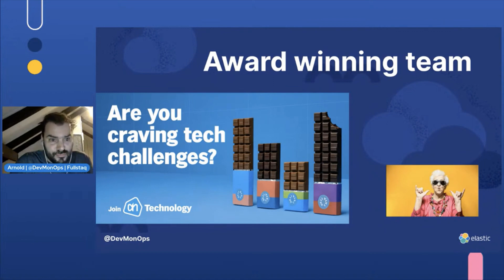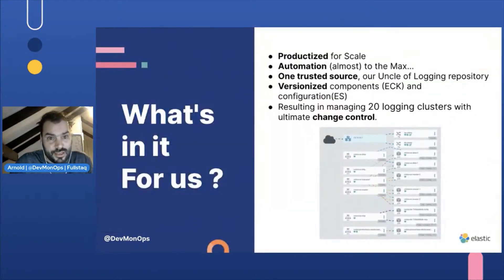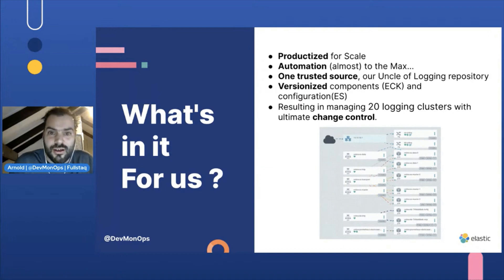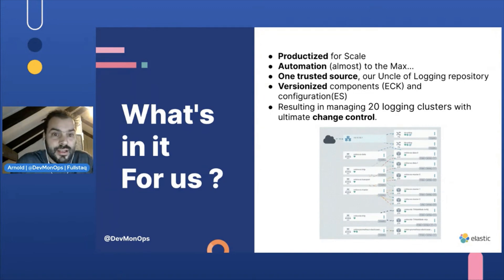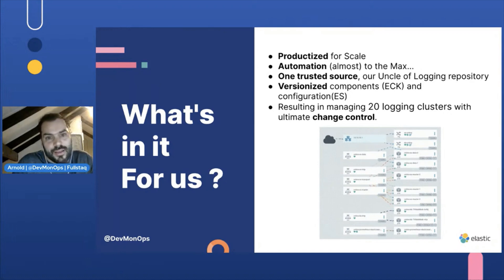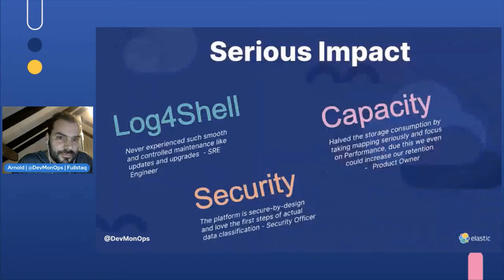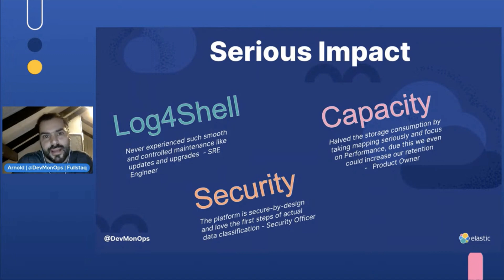Looking at what's in it for us — what did we get from this implementation? We got a productized solution really built for scale: one source to manage, our central logging repository, with versionized configuration for both the infrastructure and the Elastic part. Some amazing change control to manage our 20 clusters with GitHub pull requests. And with Argo, we got really good insights into the dependencies.